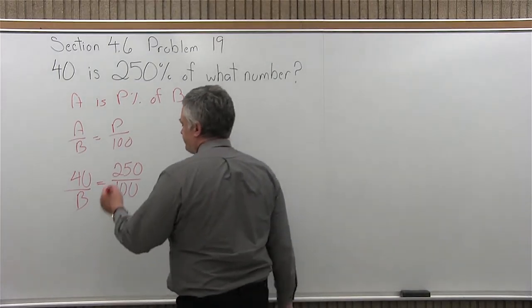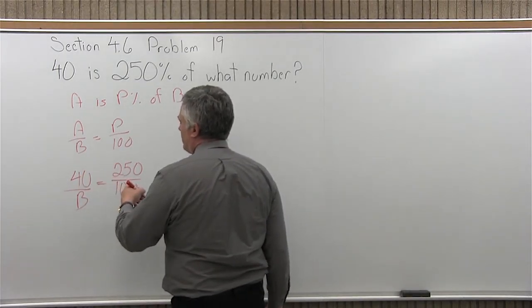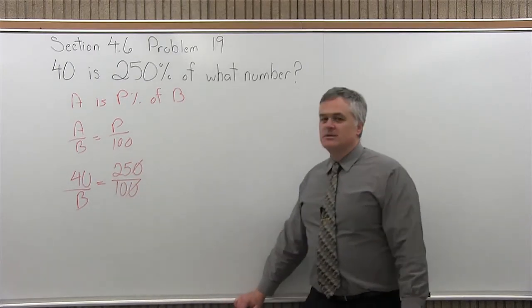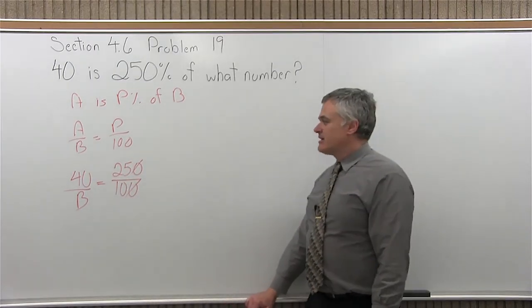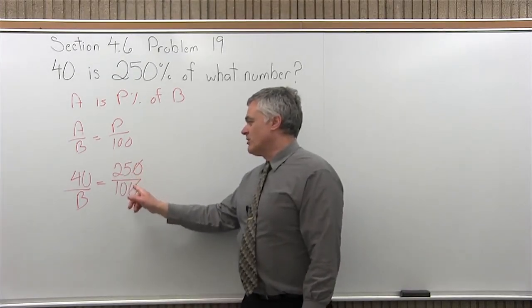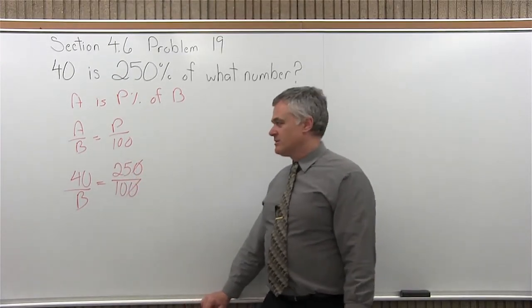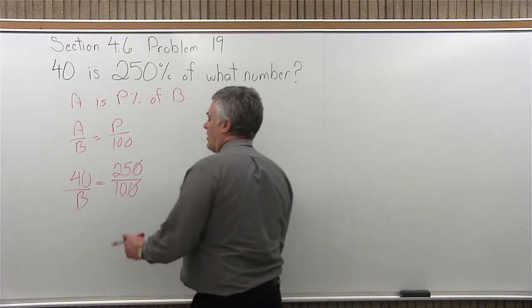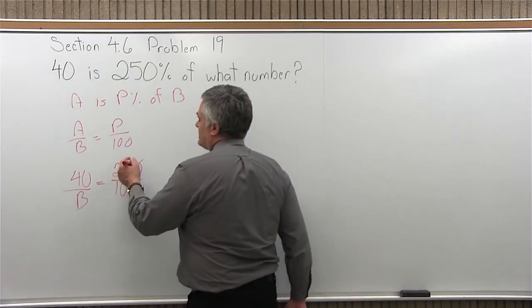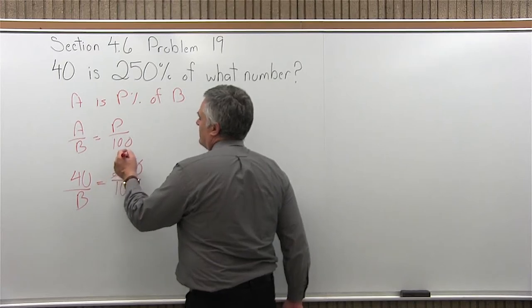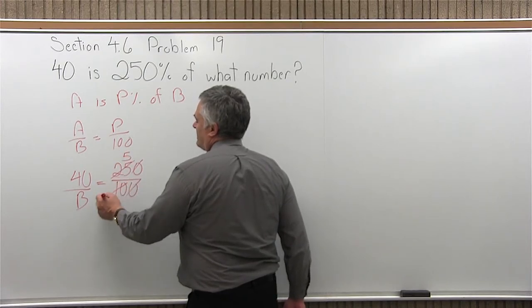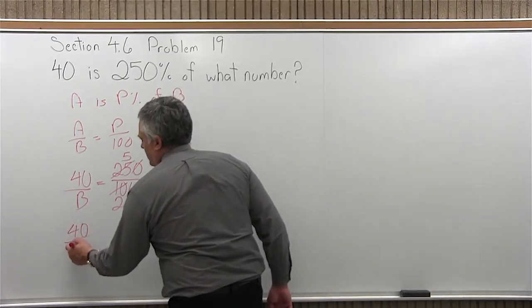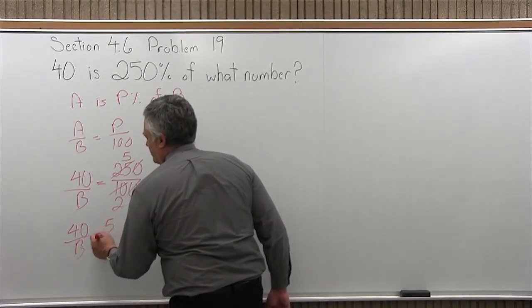Now, I can cross multiply right now and divide. I can reduce somewhat. I can at least chop a zero off the end, technically dividing 10 into the numerator and also dividing 10 into the denominator. So it becomes 25 over 10. And I can reduce that even a little bit more. They both reduce nicely by 5. 25 divided by 5 is 5, 10 divided by 5 is 2. So let's rewrite it as 40 over B equals 5 over 2.